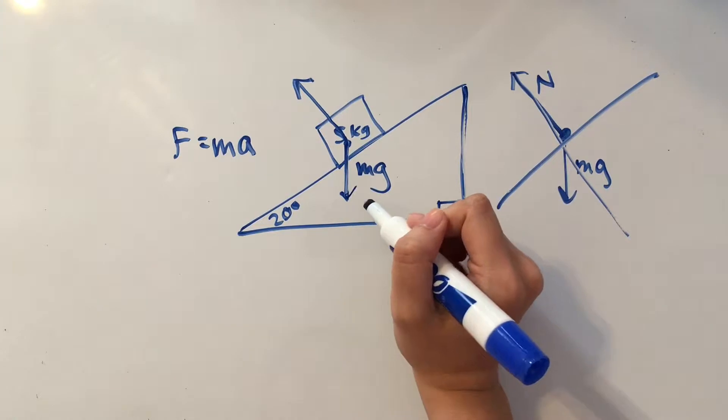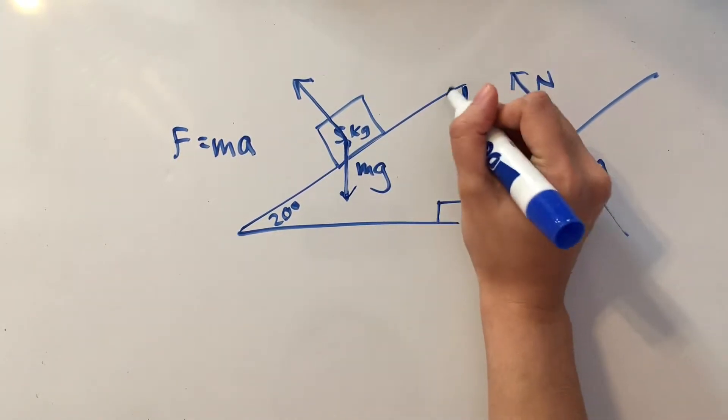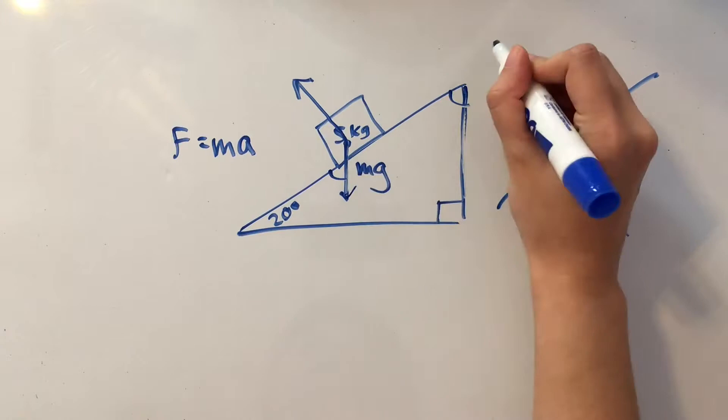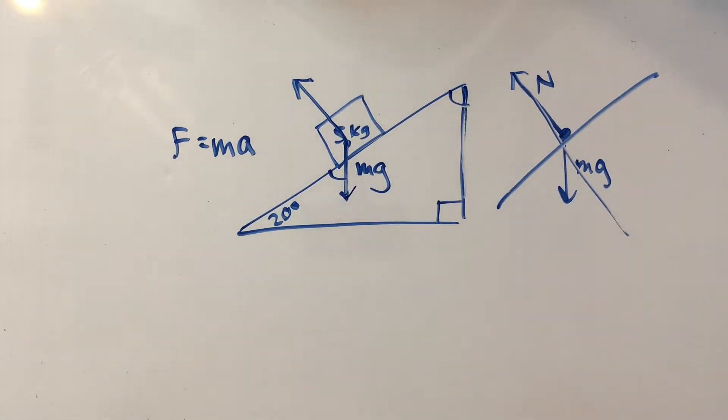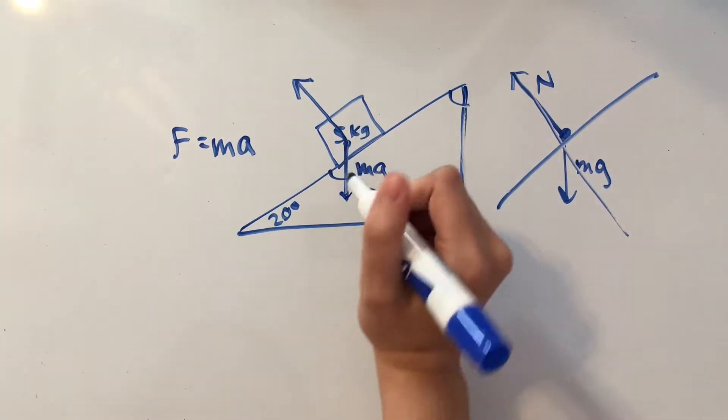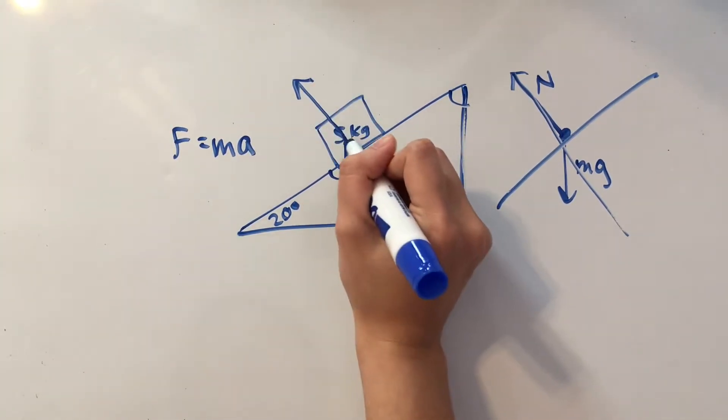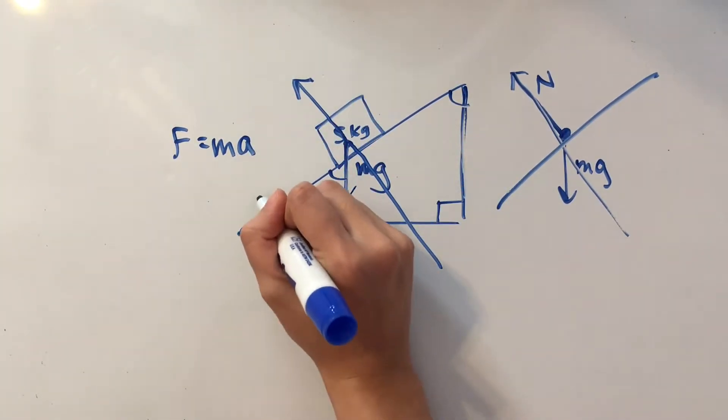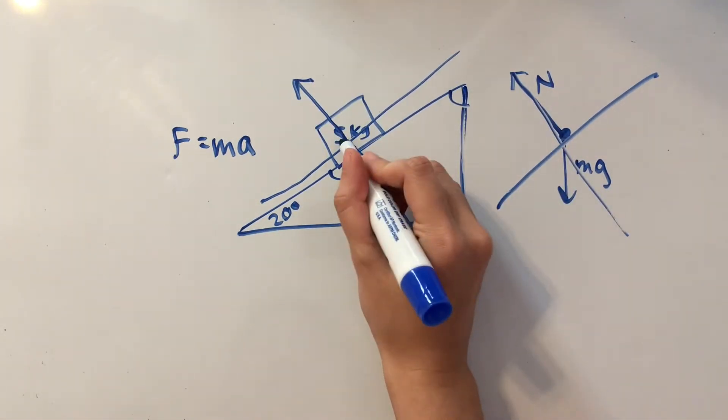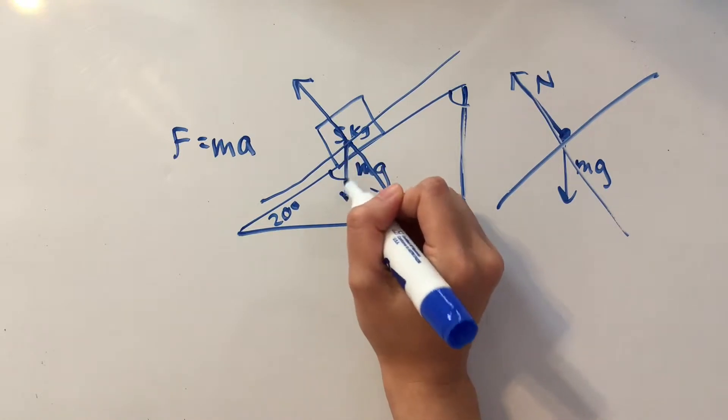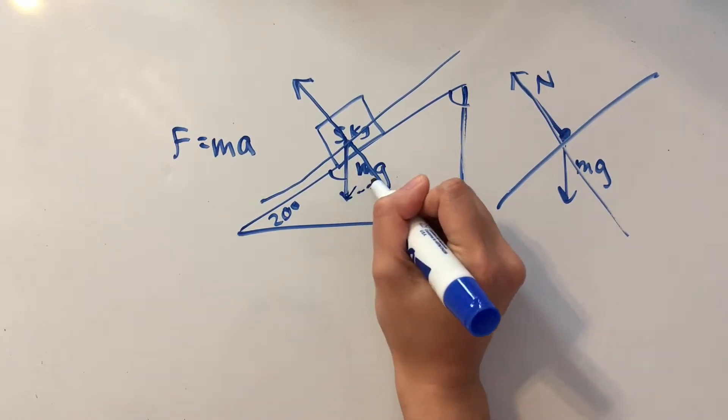We know that from geometry class, since these two lines are parallel and we have an intersection, these two angles are going to be equivalent to each other. What we're also going to do is draw in the lines for our new reference frame. So that is going to be our new reference frame. And as you can see here, our mg forms the hypotenuse of a new triangle.